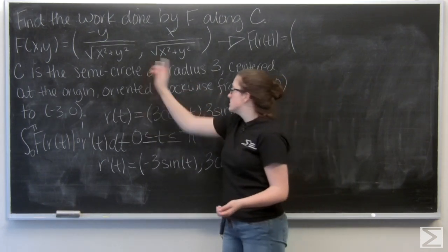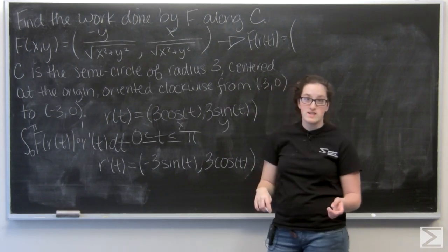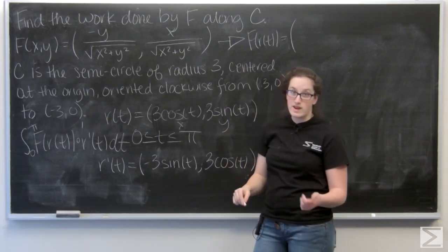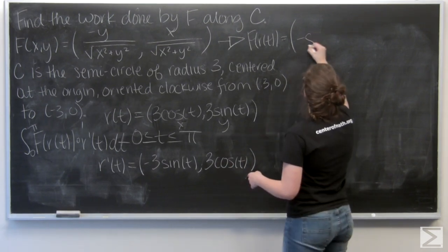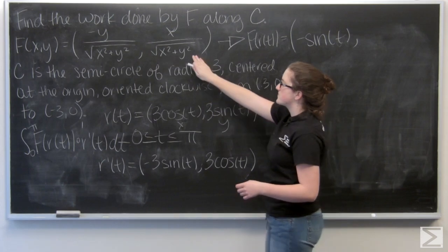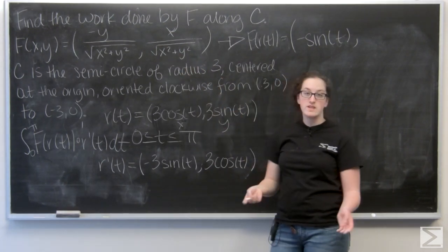Because now I just want to plug in 3 sine of t over here and I'm going to get 3 sine t over 3. Excuse me, -3 sine t over 3. So -sine t. And then for the second component, I'm going to plug in 3 cosine t divided by 3 and get cosine t.